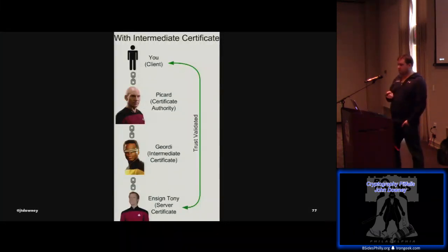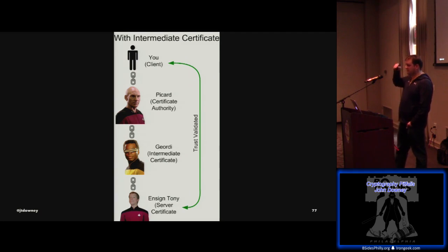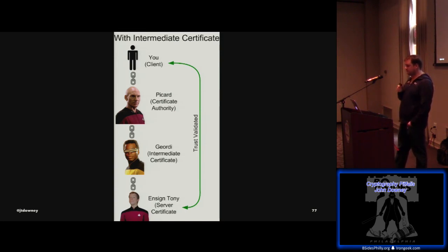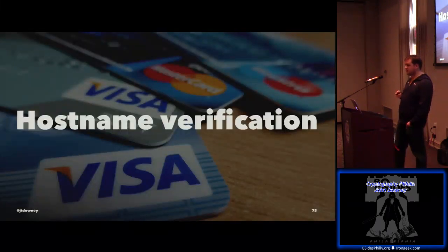Briefly about not validating the certificate chain. The way to think about certificate chain checking is: you trust Captain Picard because he's Captain Picard — he's like the certificate authority. You don't trust Ensign Tony — he's a red shirt, sort of like the server certificate. But Captain Picard trusts Geordi LaForge, and Geordi LaForge trusts Ensign Tony. Therefore you have this chain of trust and can validate all the way down. But validating that you trust the certificates doesn't mean you've validated who that certificate is for — that leads us into hostname verification.